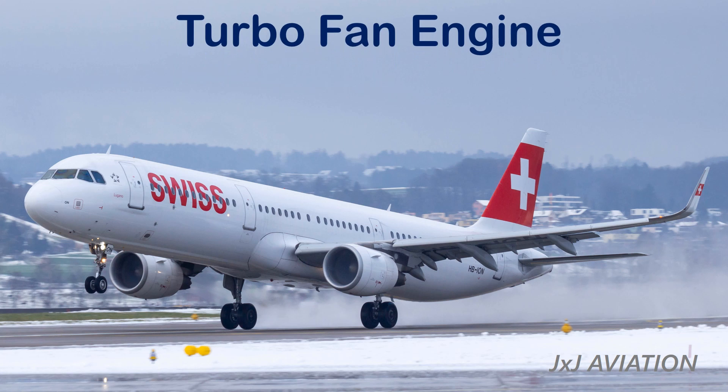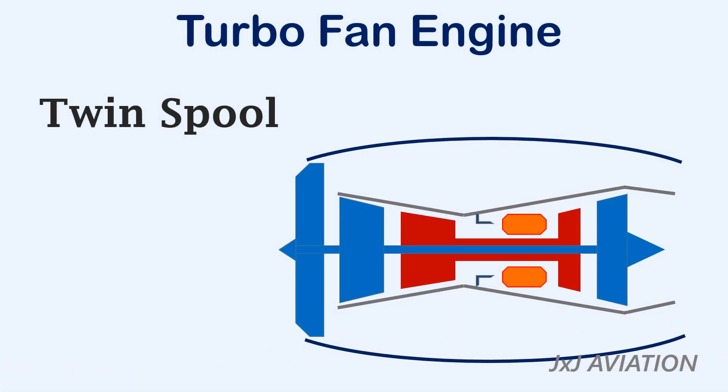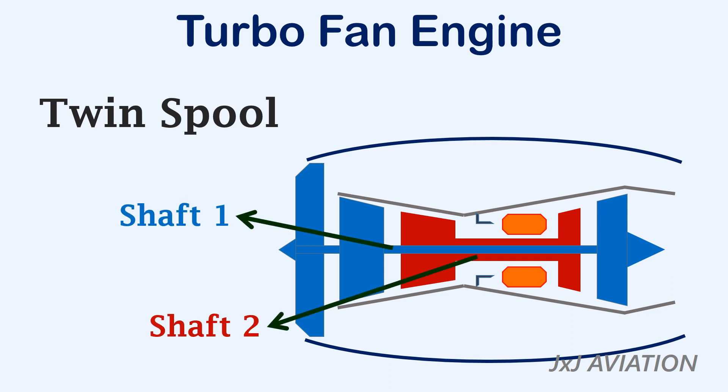We will consider a turbofan engine having two shafts, which is also called a twin spool turbofan engine. This is shaft 1 and this is shaft 2. Let's break down the engine and look at the function of each component.